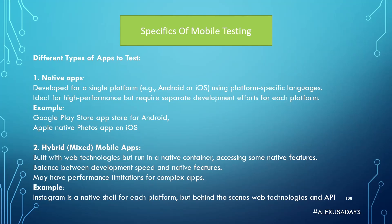Then there are hybrid or mixed mobile apps. They're built with web technologies but run in a native container, accessing some native features. They provide a balance between development speed and native features, but may have performance limitations for complex apps. An example is Instagram, which uses a native shell for each platform but has web technologies and APIs behind the scenes.